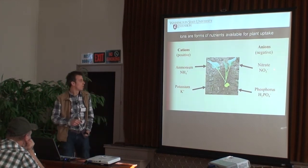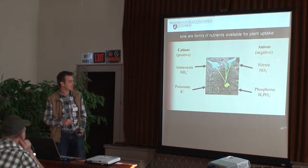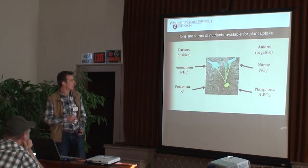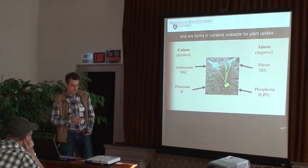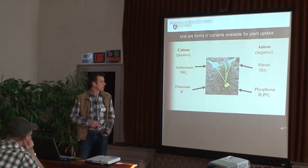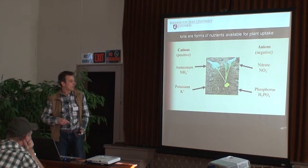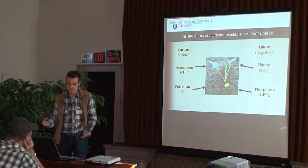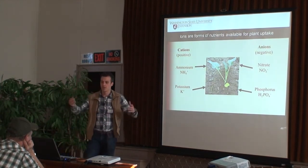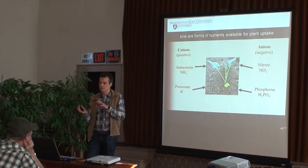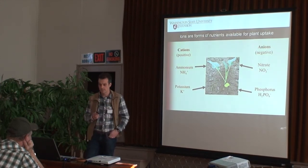Not only does the nutrient have to be present for plants to take it up, it has to be in the right form. Plants take up nutrients as ions. For nitrogen, plants take up nitrate or ammonium. Potassium is taken up as the free ion. Phosphorus is taken up as phosphate or orthophosphate. When we look at a fertility analysis, we're concerned with the available amount of potassium — is it in the right form for plants to take up?